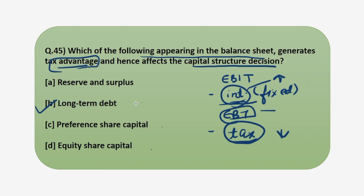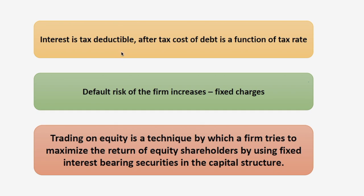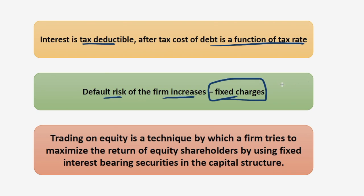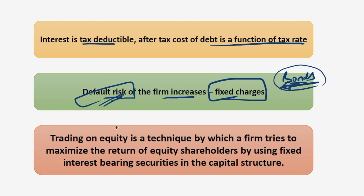As we have seen, interest is tax deductible, so the after-tax cost of debt is a function of the tax rate. However, long-term debt is also associated with a major drawback: the default risk of the firm increases because interest is a fixed charge against profit. Whether or not a firm has money, it must pay the interest on its bonds or debentures. If a firm defaults on interest payments, as seen from past examples, there arises a default risk on those companies.